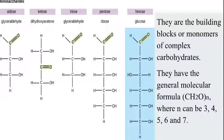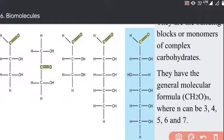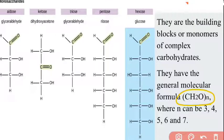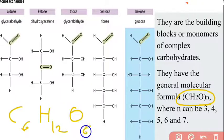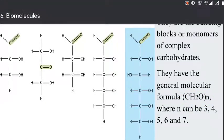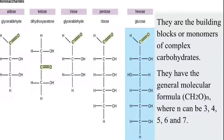Monosaccharides have the general molecular formula (CH₂O)n. For example, glucose has the formula C₆H₁₂O₆, where n equals 6 — giving 6 carbons, 12 hydrogens, and 6 oxygens (2n of hydrogen). The value of n can be 3, 4, 5, 6, or 7, so the number of carbon atoms in a monosaccharide can vary.